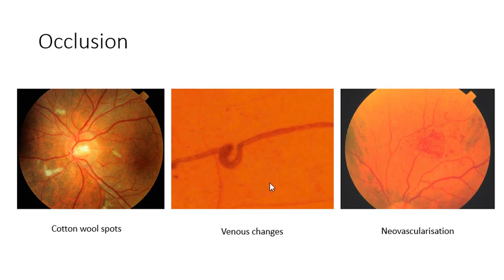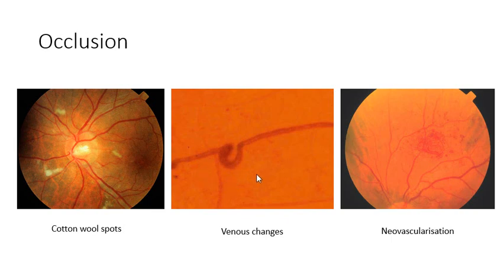The next sign of occlusion is venous changes, or irregular veins. This is a generalised dilation or fattening of the vessels, tortuosity or looping as you can see here, or you can get beading and sausage-like segmentation of the vessels — pretty much looking like a string of sausages.